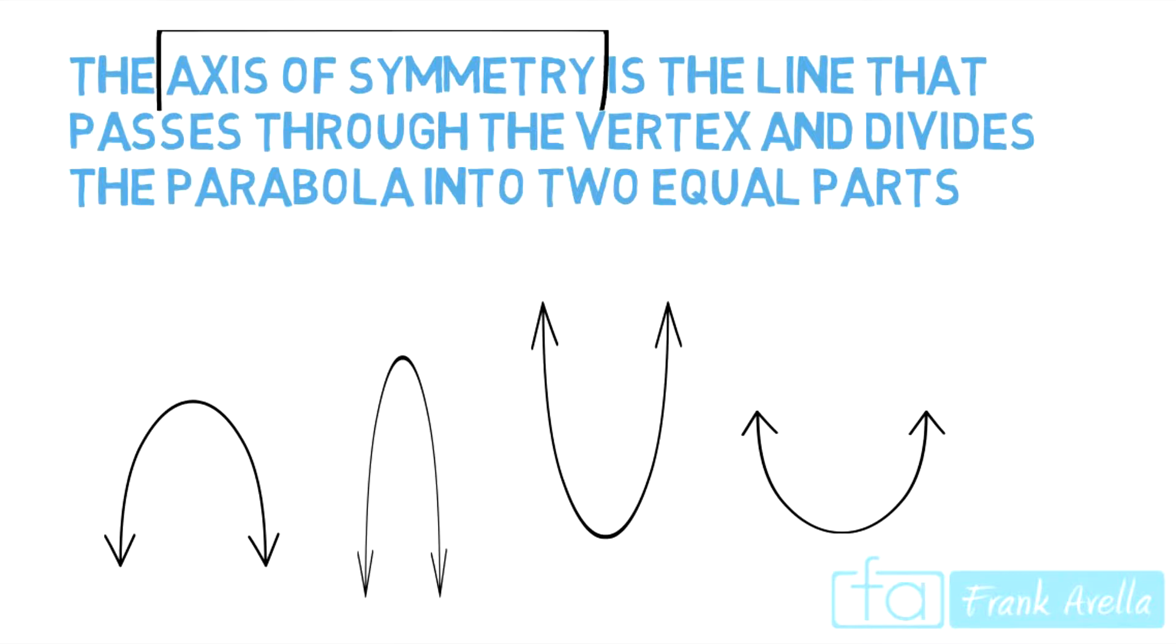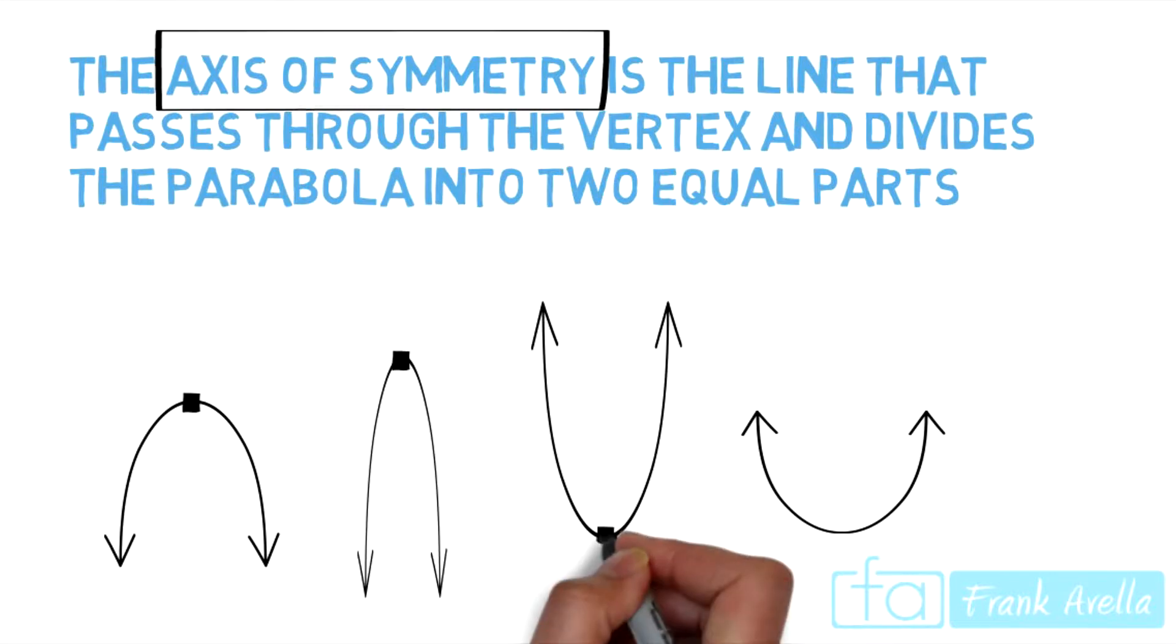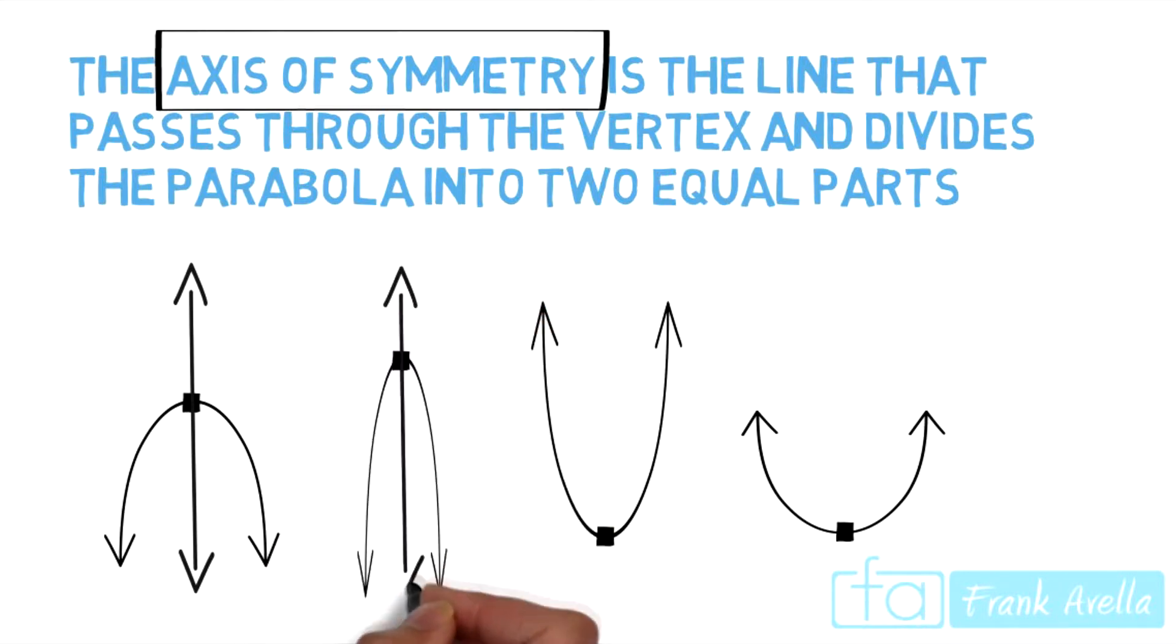Again we're looking for the axis of symmetry, which passes through the vertex. So let's identify the vertex. And the axis of symmetry is a line that passes through the vertex. So here we're going to draw some lines straight through the vertex.